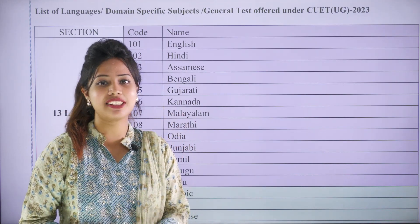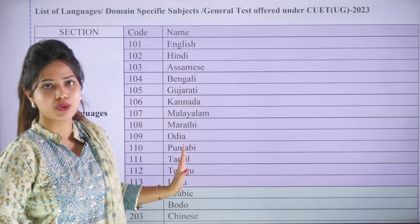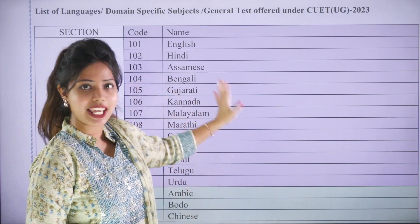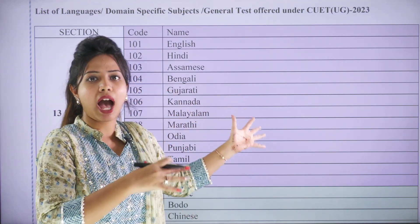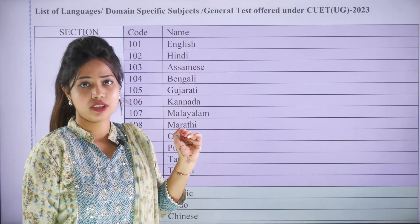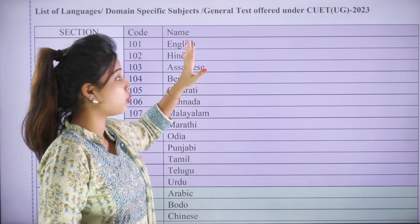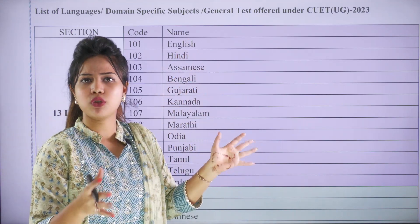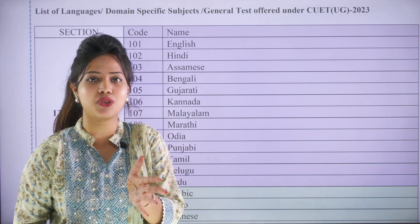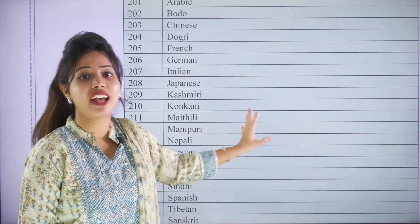There are 13 languages in Section 1A as listed. One specification about Section 1A languages is the bilingual concept: if you choose English, your domain-specific subject will also be in English; if you choose Hindi, your domain-specific subject will also be in Hindi. That is the key specification about the language section.